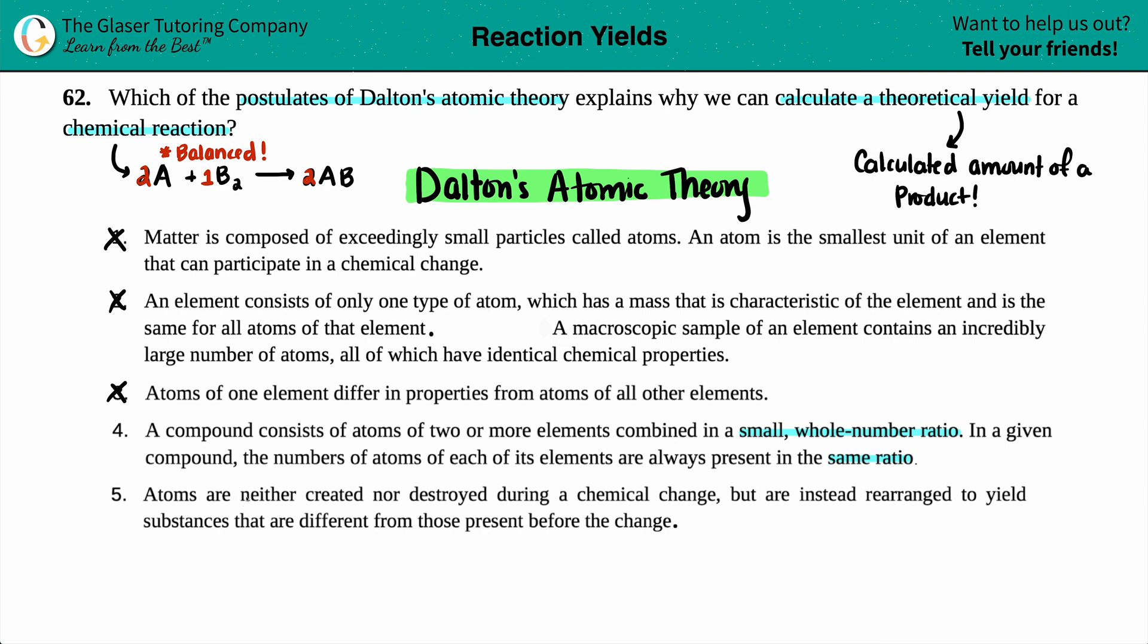Five says, atoms are neither created nor destroyed during a chemical change, but are instead rearranged to yield substances that are different from those present before the change.